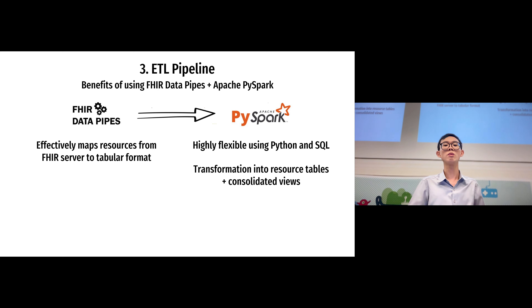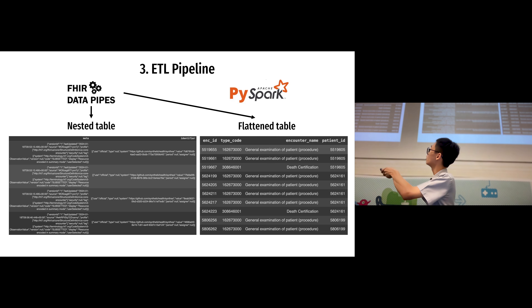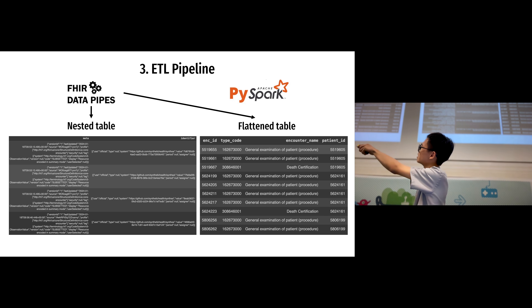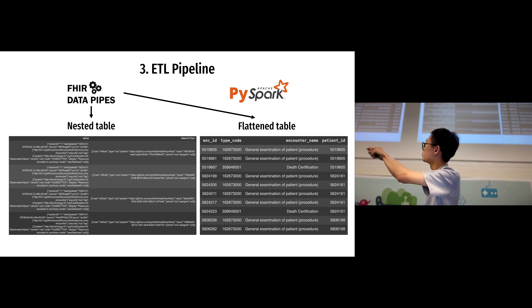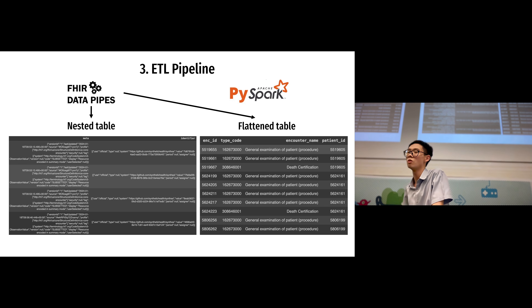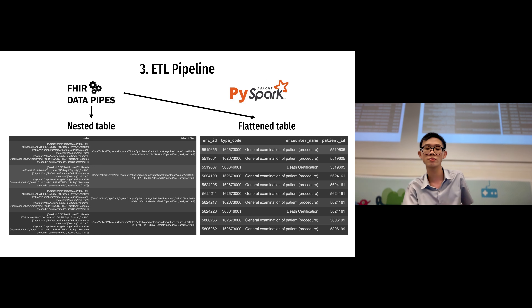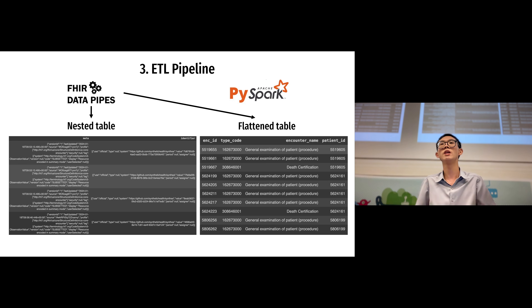Looking at some table examples — the nested table here shows procedures, and you can see how deeply nested it is. It has a lot of information contained within many layers of nesting, which is very hard to deal with. But all this data is still important. So we use SQL within PySpark to extract the information and put it into a single-level table — one set of rows, one set of columns — much easier to analyze. By selecting what we need to map, we can use all the data we need without dealing with the complexity of nested structures.